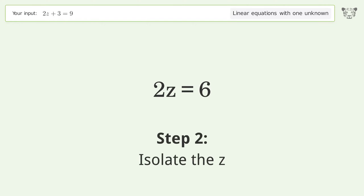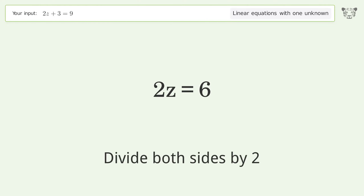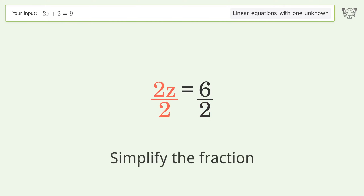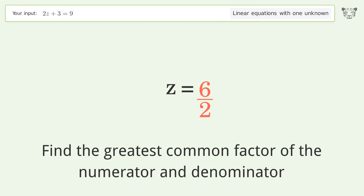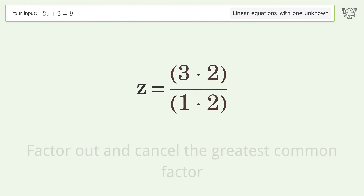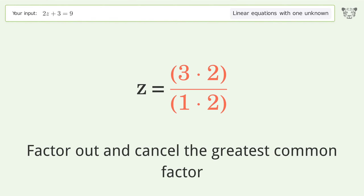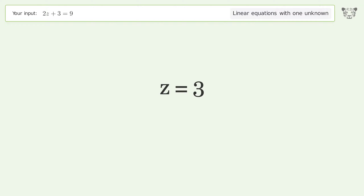Isolate the z — divide both sides by 2 and simplify the fraction. Find the greatest common factor of the numerator and denominator, then factor out and cancel the greatest common factor. And so the final result is z equals 3.